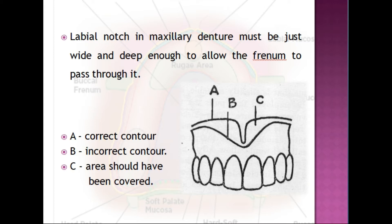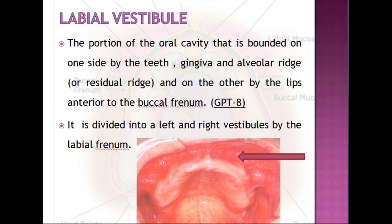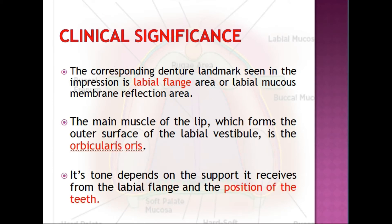Next is the labial vestibule. The labial vestibule is a portion of the oral cavity bounded on one side by the teeth, gingiva, and alveolar ridge, and on the other side by the lips, anterior to the buccal frenum. It is divided into right and left vestibule by the labial frenum. The corresponding denture landmark seen in the impression is called the labial flange area, which lies between the labial and buccal frenum.